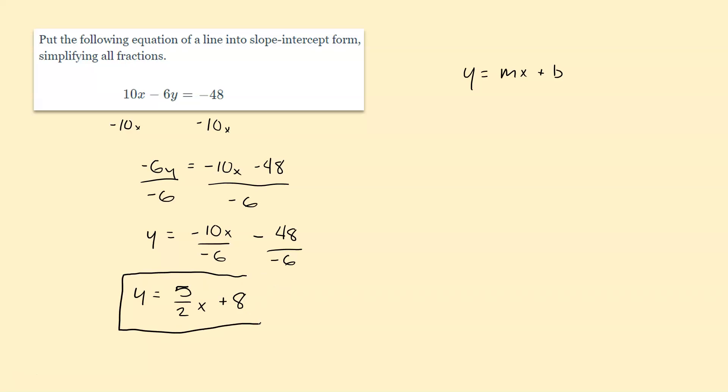So this would be our final answer in slope intercept form. So we can see that m is equal to 5 halves and b is equal to a positive 8.